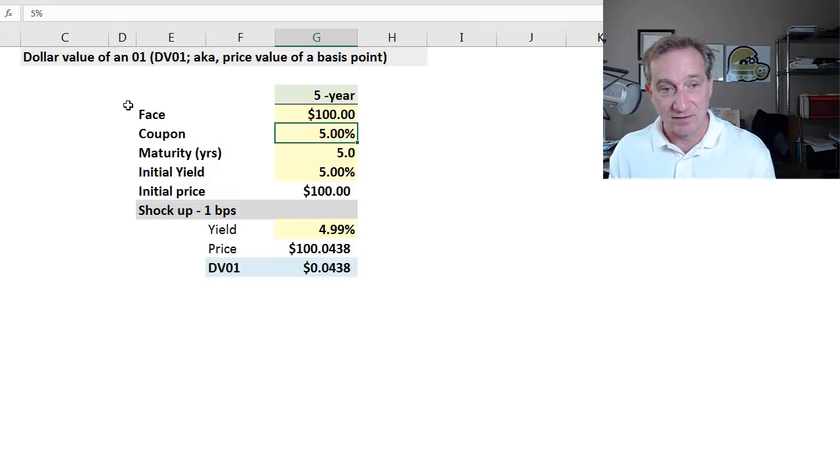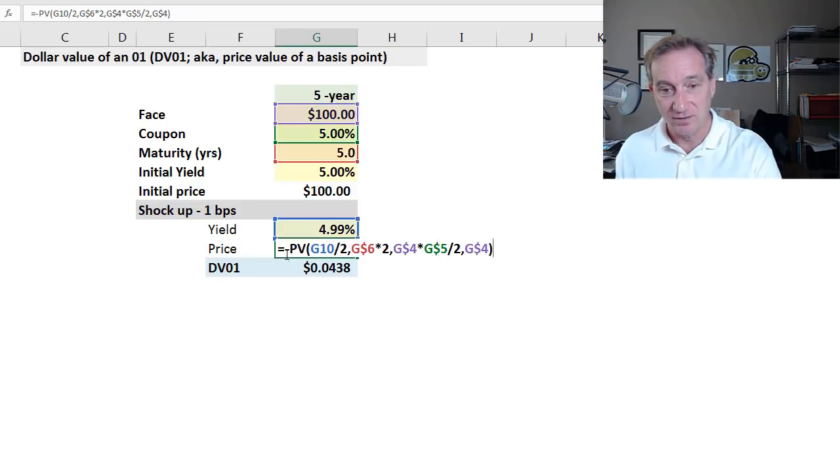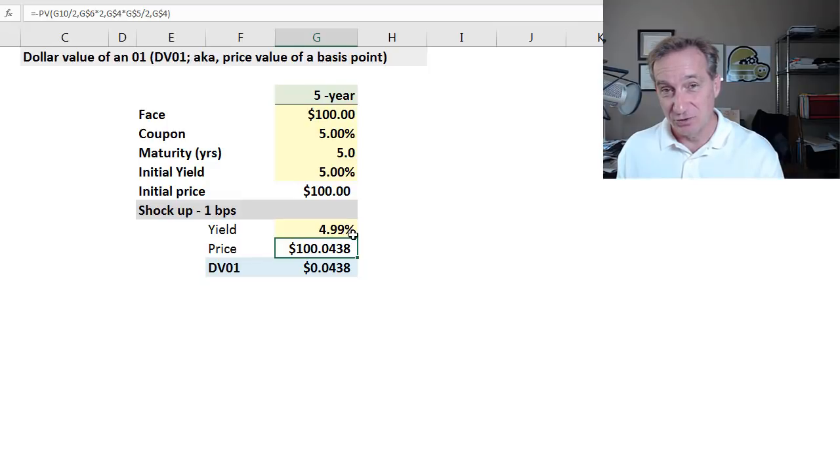So I have my initial price, and then I ask, what is the price value of a basis point? All I do is I shock the yield by one basis point, and technically and specifically, it's a drop or decline in the yield. In this case, I go from 500 basis points to 499 basis points. It's a small change, a sensitive measure. Now that my coupon is slightly higher than the yield, we're not surprised to see the bond would price at a premium, specifically $100 and 4.38 cents.